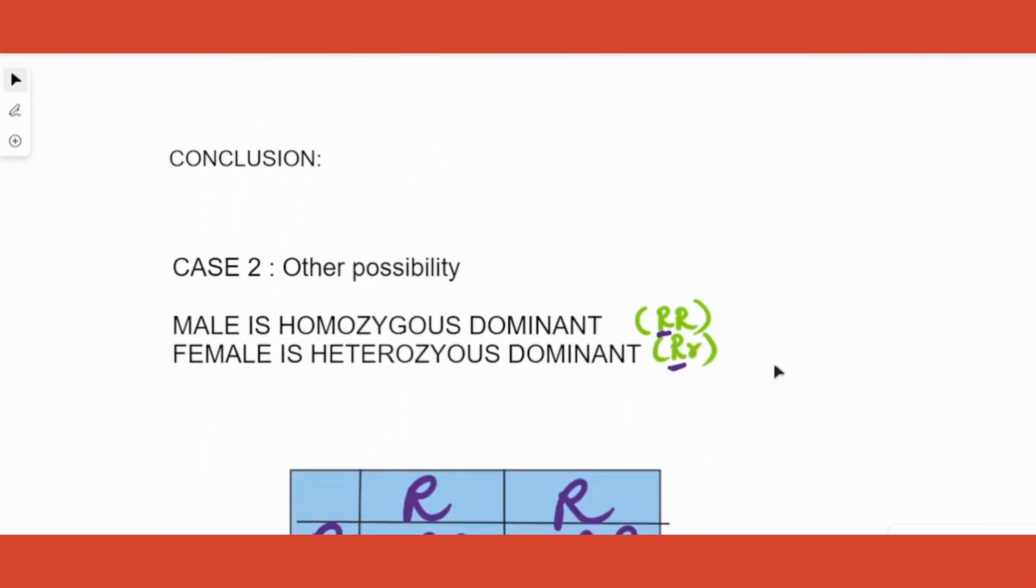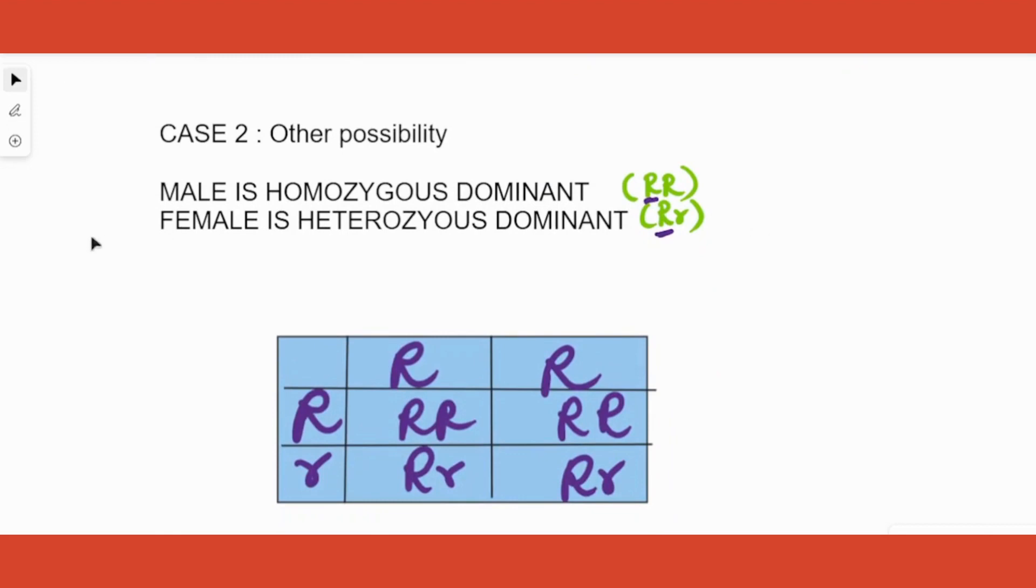Now what is the other possibility? Other possibility meaning if the male is homozygous and female is heterozygous. That is another case given to you. Case number two: the male is homozygous dominant so he is a roller, and female is heterozygous dominant so she is also a roller.